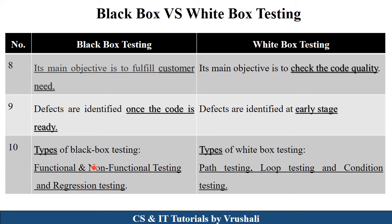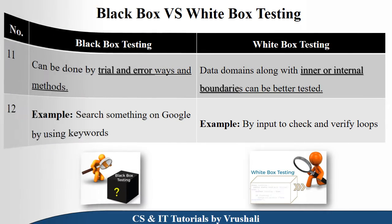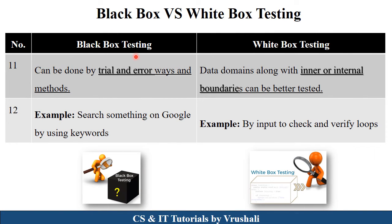Black box testing mainly includes functional, non-functional, and regression testing types. White box testing has types like path, loop, and conditional testing. Black box testing is also known as the trial and error method — a set of inputs is passed to the product and the expected output is checked. White box testing has inner or internal boundaries and works on the internal structure of the particular product.